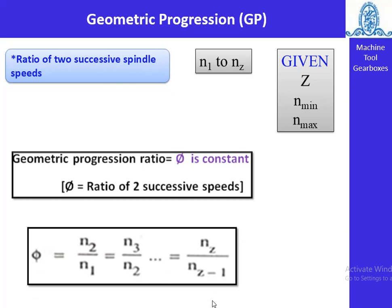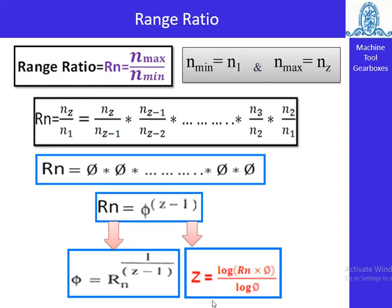The range ratio Rn = n_max / n_min = nz / n1 = φ^(z−1). Taking the log of both sides: φ = Rn^(1/(z−1)), or equivalently z = (log(Rn) / log(φ)) + 1. From these relations, we can easily find φ, z, and Rn.